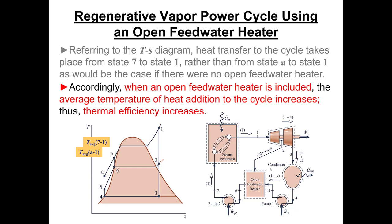What's less obvious is that we lose some steam through the low pressure turbine expansion — states 2 to 3 on the diagram — because we extracted a mass fraction y to go to the open feed water heater. However, this loss in power produced between states 2 and 3 is more than offset by the reduction in heat input between states 7 and 1, which is why the efficiency remains higher.